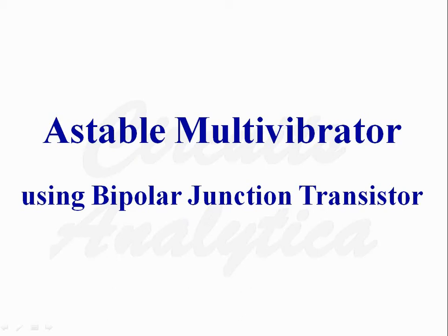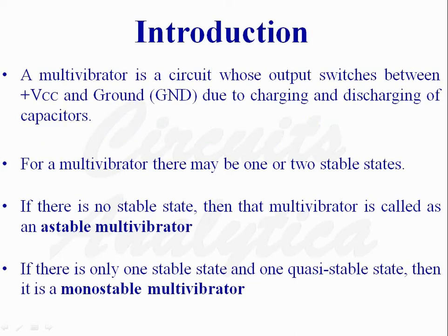A stable multivibrator using bipolar junction transistors. A multivibrator is a circuit whose output switches between plus VCC and ground due to charging and discharging of capacitors. For a multivibrator there may be one or two stable states. If there is no stable state, then that multivibrator is called an astable multivibrator. If there is only one stable state and one quasi-stable state, then it is called a monostable multivibrator.